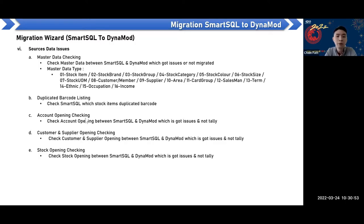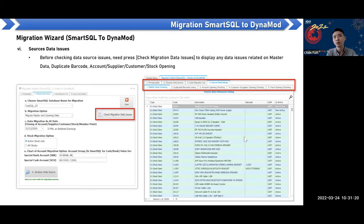Check the account opening between Smart SQL and Dynamo for any issues. Also check supplier and customer opening for issues. For stock opening, if the figures differ slightly, it may be due to decimal rounding in the Smart SQL data. If it's not a significant difference, you can ignore the stock opening discrepancy.